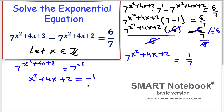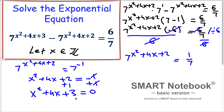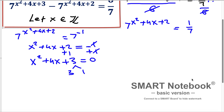To solve this quadratic equation, we set one side equal to zero. Adding 1 to both sides, we get x² + 4x + 3 = 0. The factors of 3 that add up to 4 are 3 and 1. Positive 3 times positive 1 is positive 3, and positive 3 plus positive 1 is positive 4. These satisfy the condition, so we can factor the quadratic into two binomials.